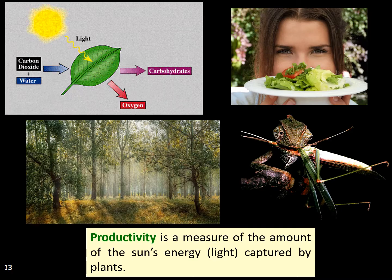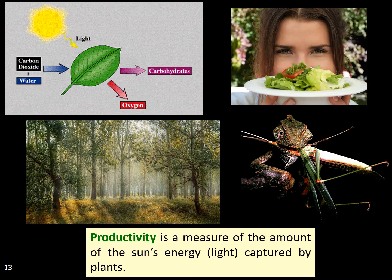Productivity is a measure of the amount of the sun's light energy captured by plants, which is then stored in the chemical bonds of the carbohydrates produced in photosynthesis. This energy is used for two main purposes: to fuel cellular respiration, and to provide the energy and material resources required for growth of new tissues and reproduction. Plants use the sun's energy to literally construct themselves from thin air, along with some nutrients obtained from the soil.